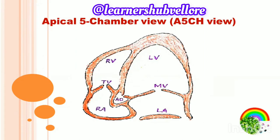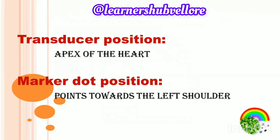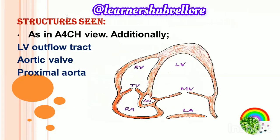Coming to the apical five chamber view. This view is obtained after the apical four chamber view by slightly tilting the transducer downward. The fifth chamber is the left ventricular outflow tract. In addition to the same structures seen in the apical four chamber view, we can also see the left ventricular outflow tract, the aortic valve, and the proximal aorta.